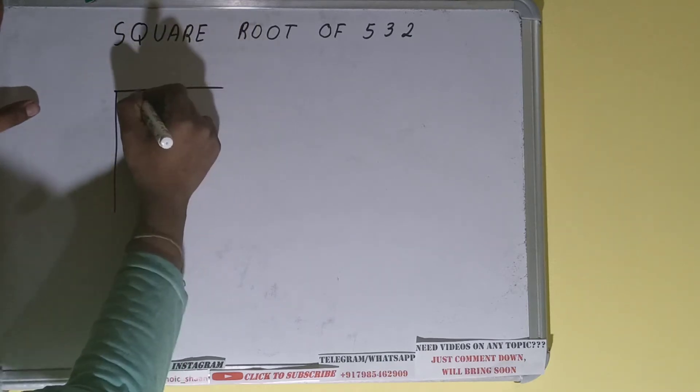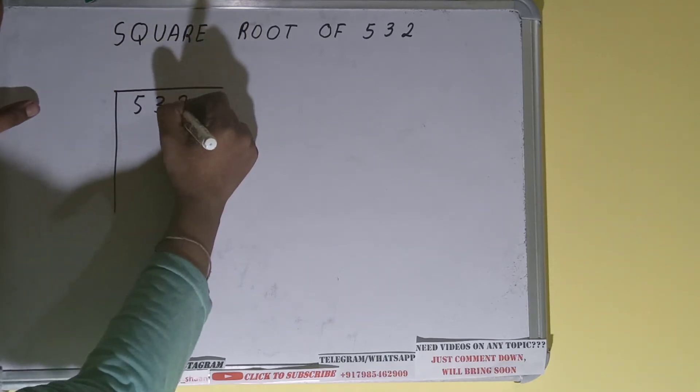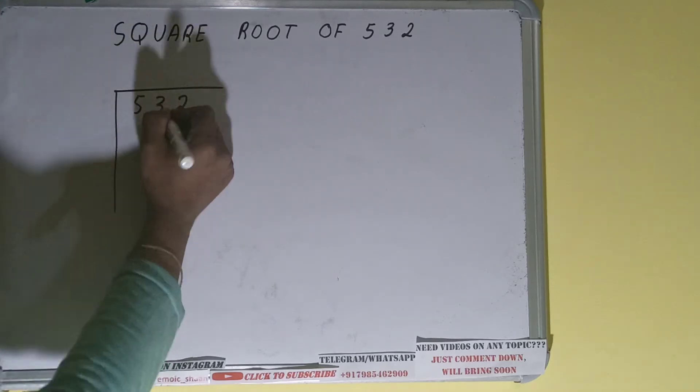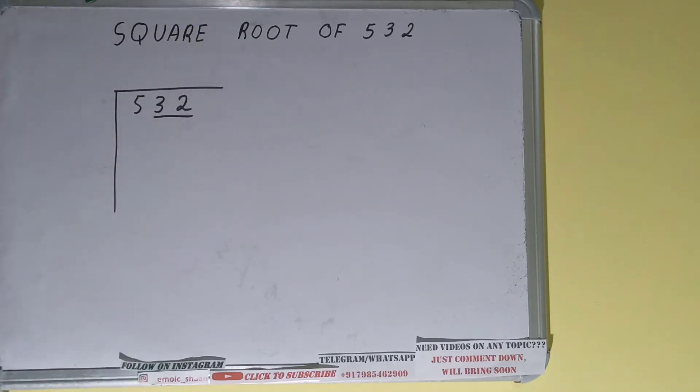So first we need to write the number like this. The next thing we need to do is form pairs from the right-hand side, so only one pair can be formed and this 5 will be left out.